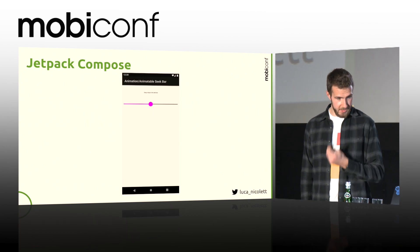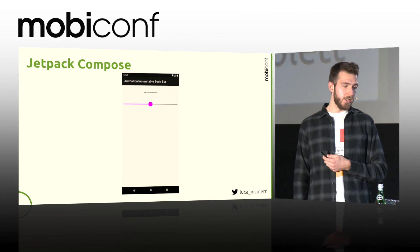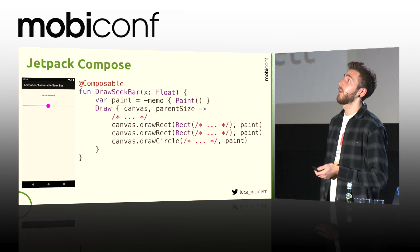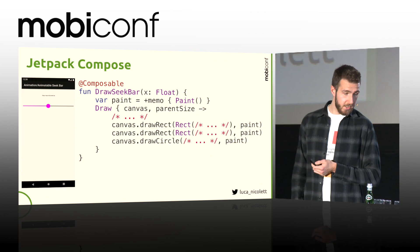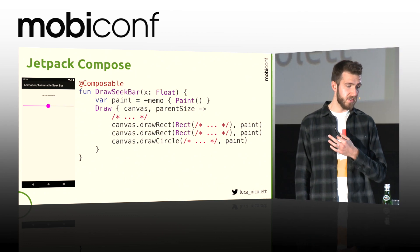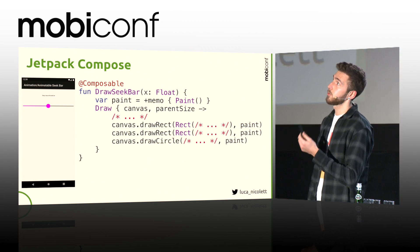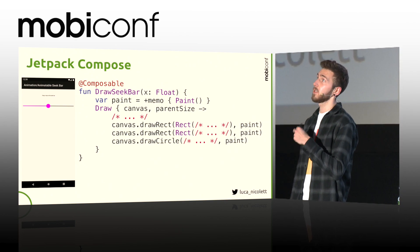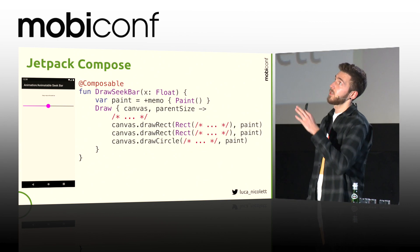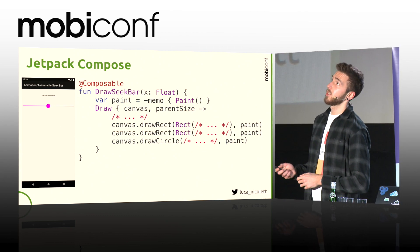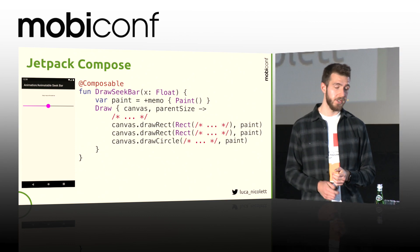Let's see how some components that they provide work. Seek bars are really easy — it's pretty simple. It just calls a draw composable function, and in the end draws two rects and a circle on the screen. This draw function — I omitted some code — it's wrapped inside a gesture recognizer.